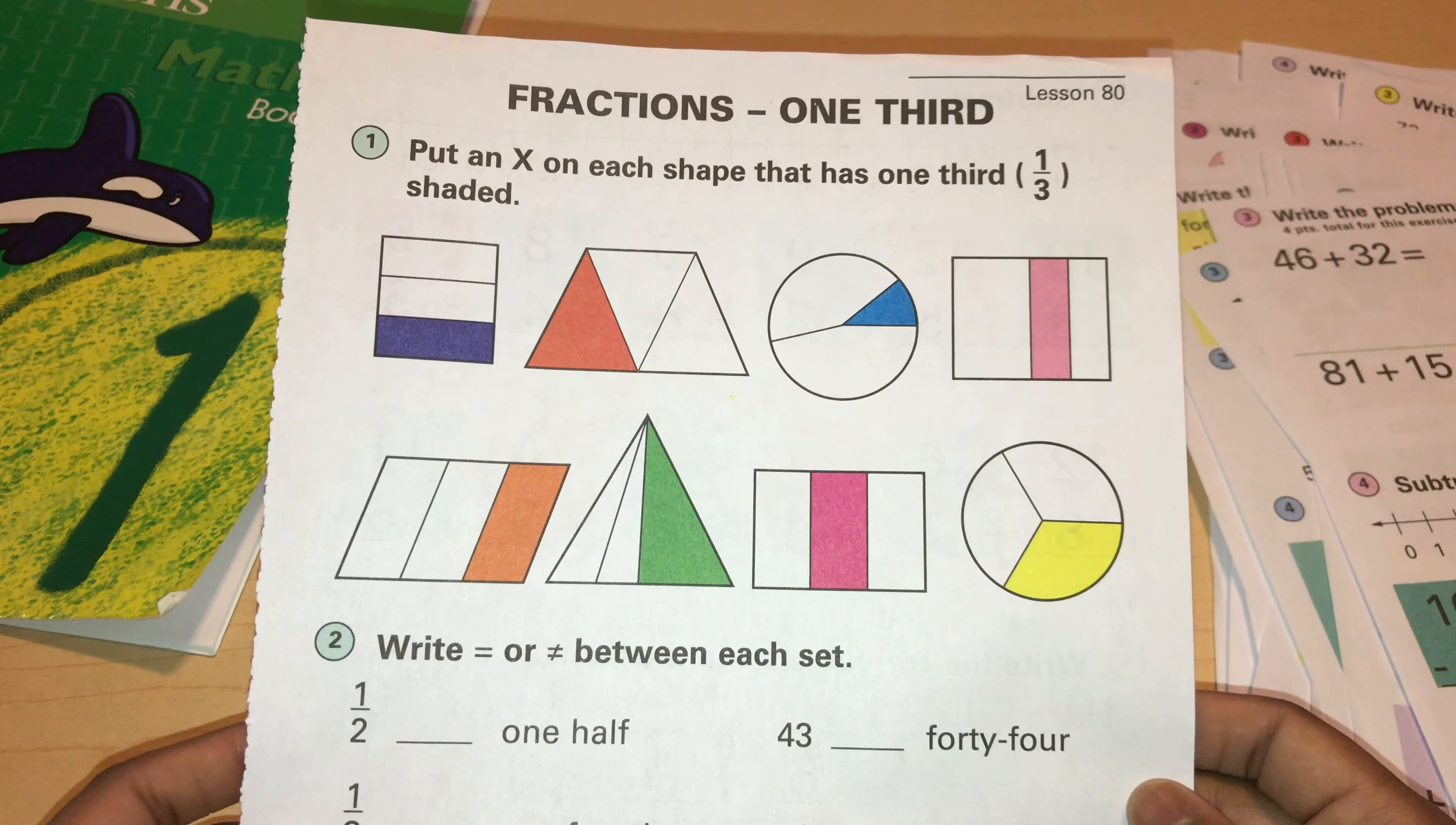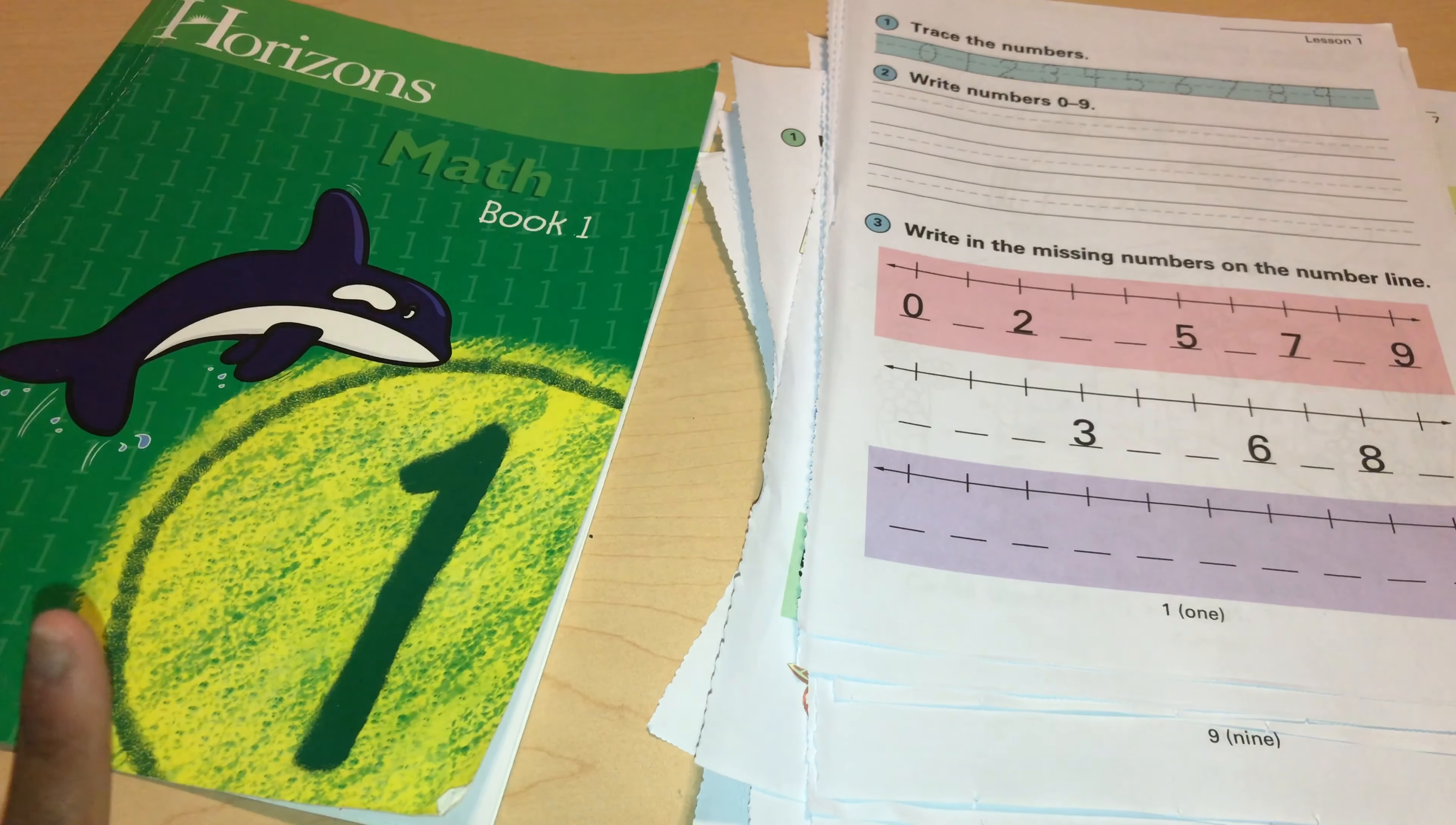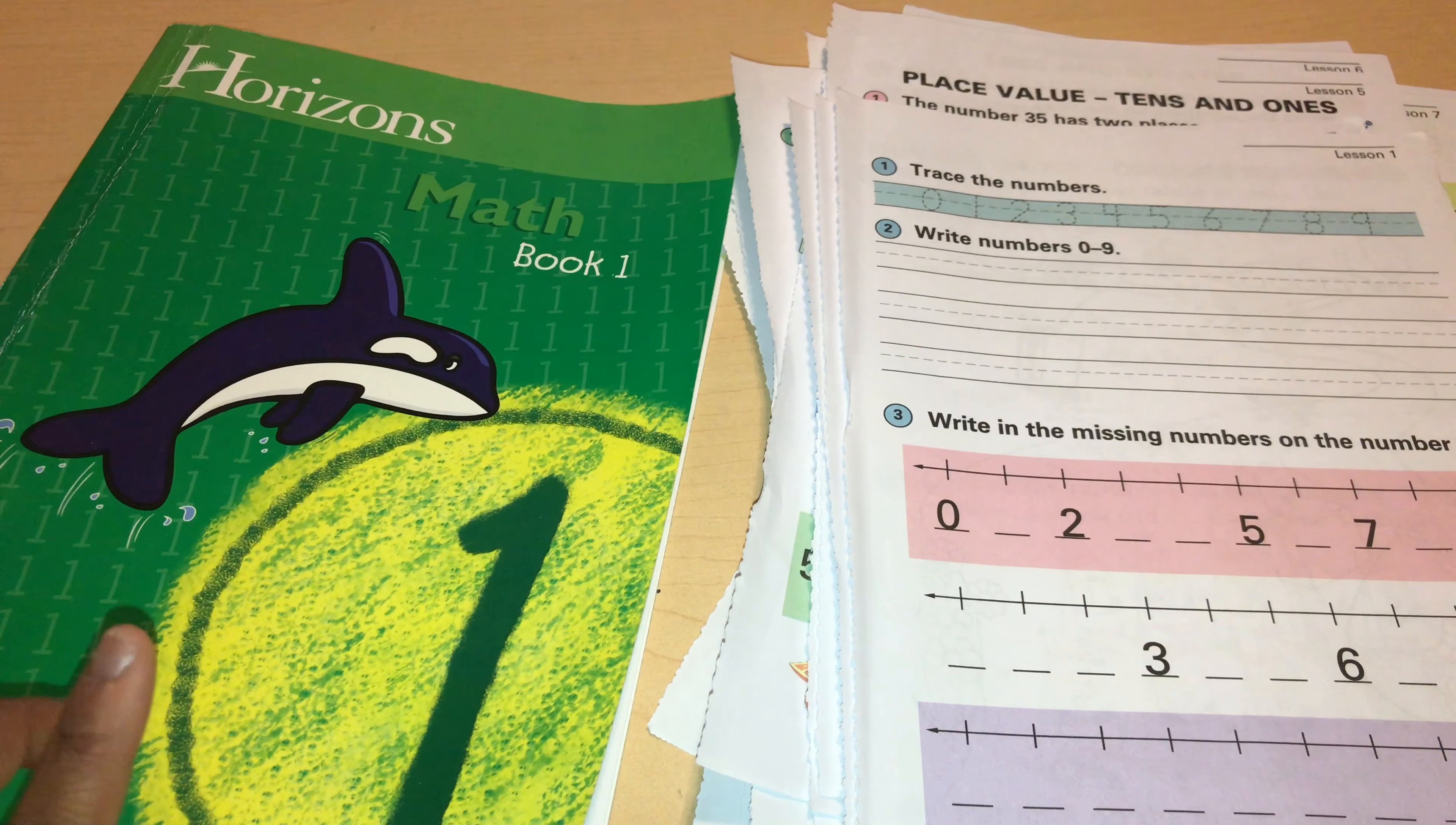And here is the last lesson, lesson 80, which goes over fraction one third. And like I said, I will be making a video of the second book when I get it. This is going to be done in 80 days because we do one lesson each day. And around lesson 70 I will be getting book two and I will be doing a whole review of it.